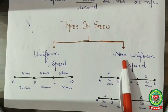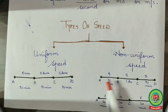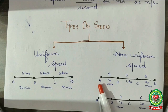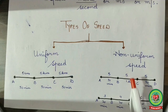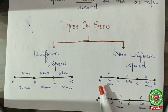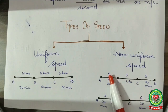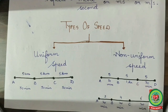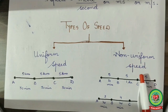Next is non-uniform speed. In the first case, a body moves from A to D, with each segment being 5 km. But it covers A to B in 30 minutes, B to C in 1 hour, and C to D in 30 minutes. The body is covering equal distances in unequal intervals of time, so it is said to be moving with non-uniform speed.